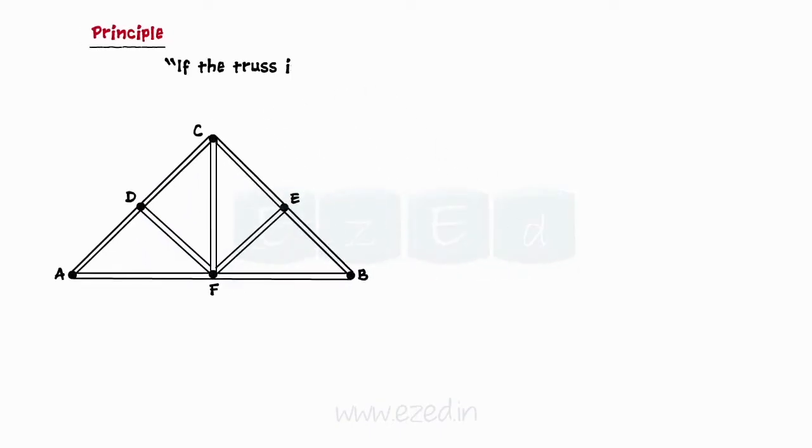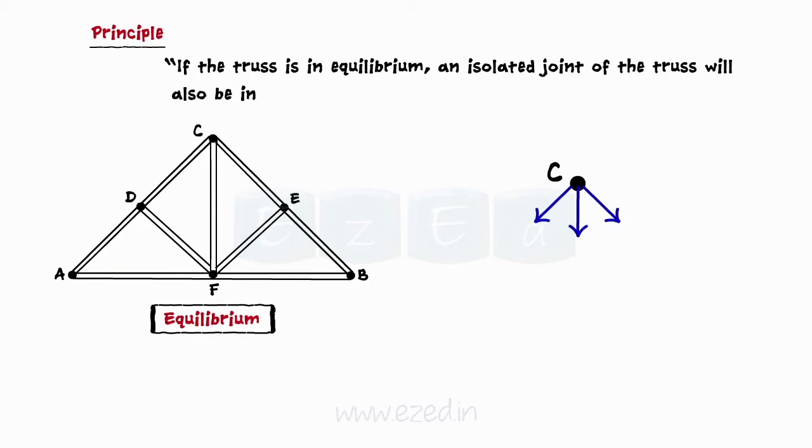The principle if the truss is in equilibrium, an isolated joint of the truss will also be in equilibrium is used in this method.